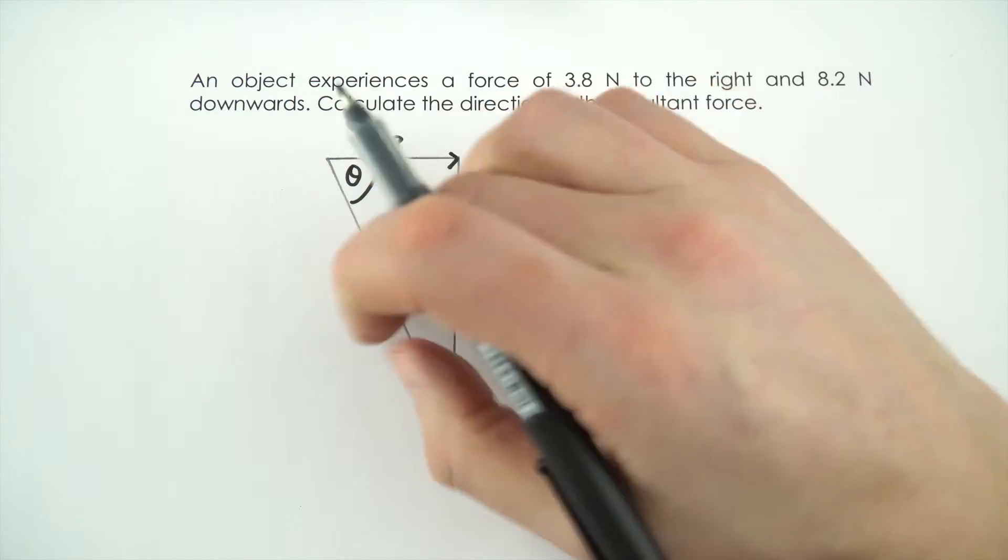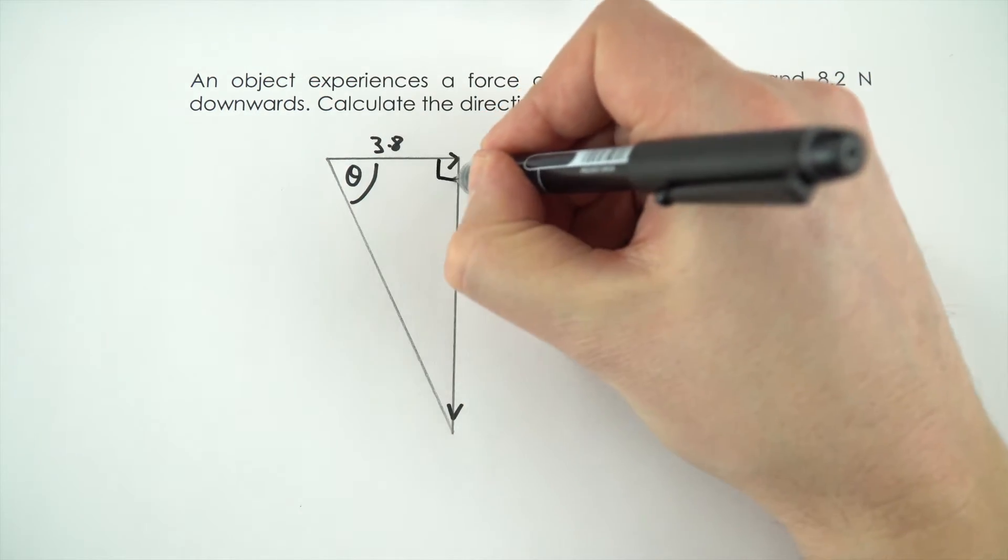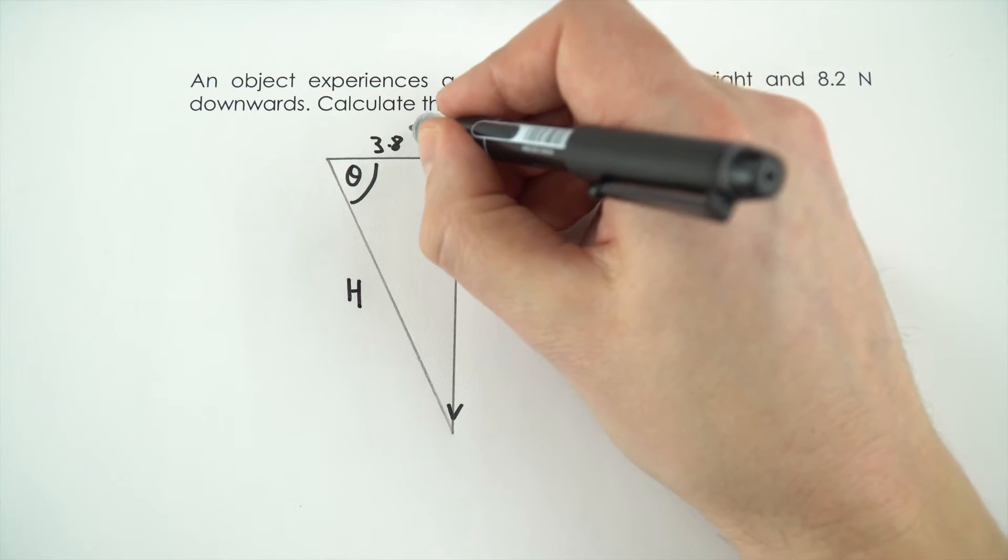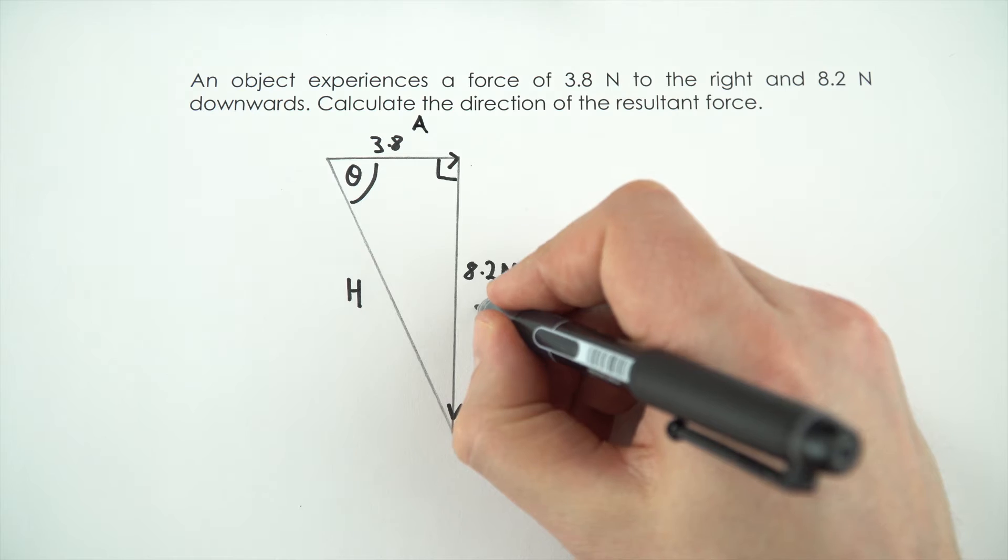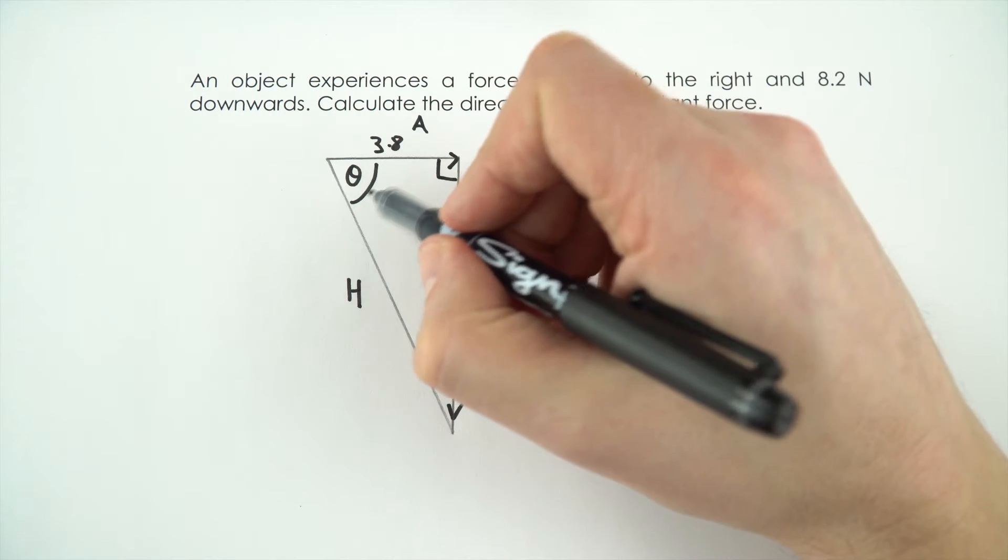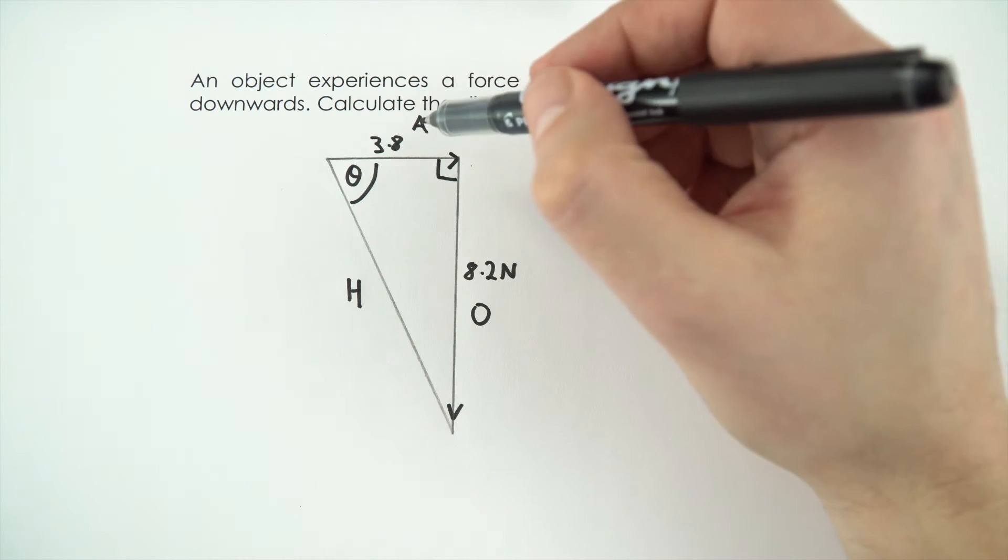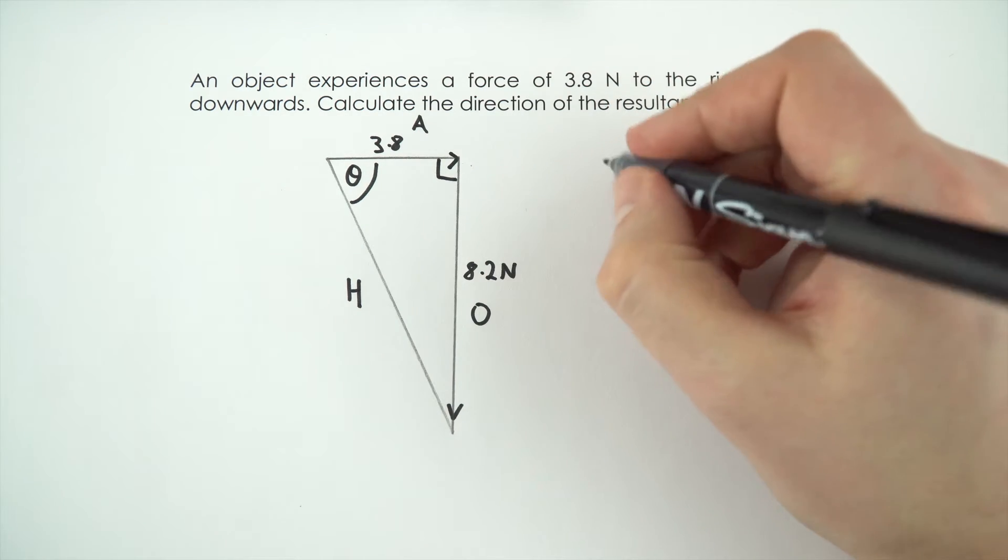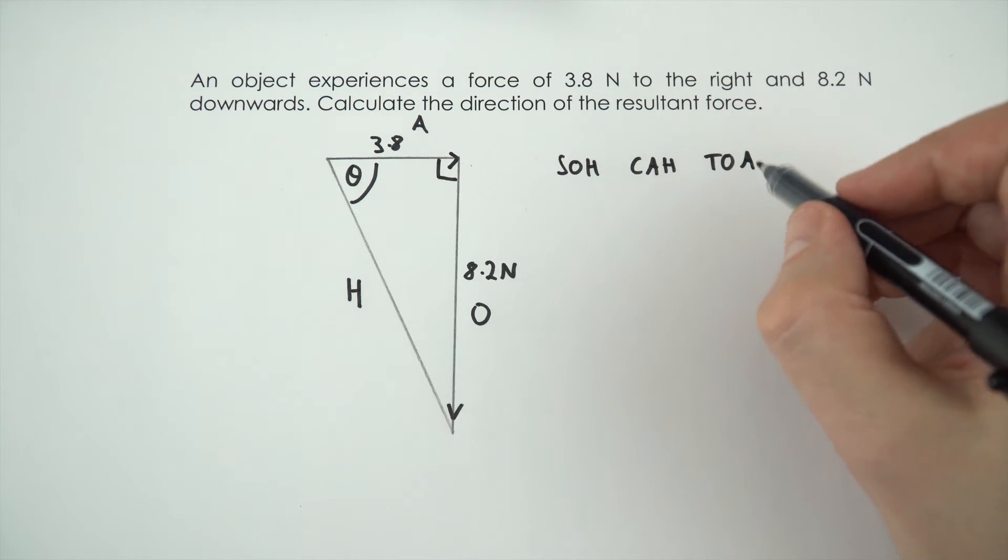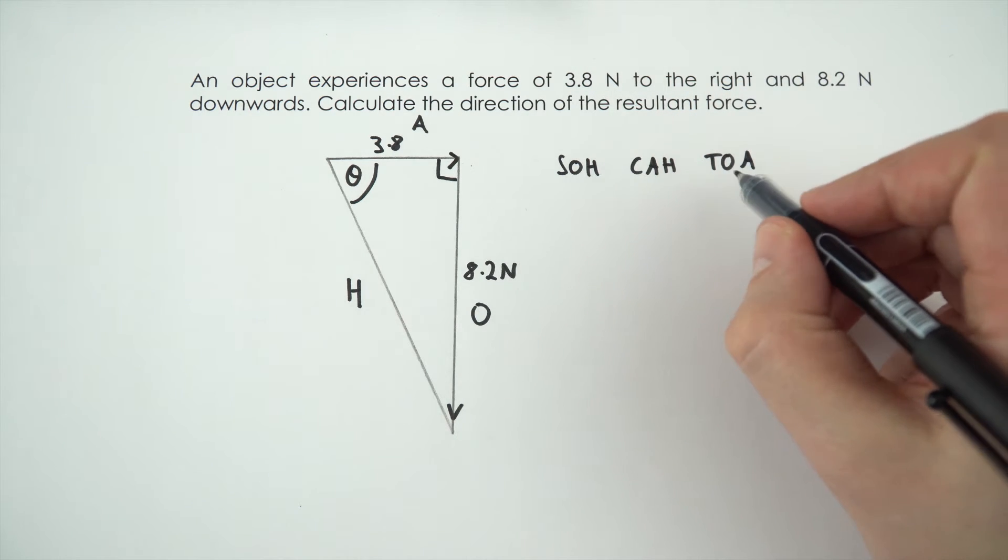I'm just going to label what I know from this triangle. It's a right angle triangle: the longest side is the hypotenuse, this side is the adjacent, and this side is the opposite. For this, our theta value is unknown, but we know the adjacent and the opposite. I remember from SOH CAH TOA that the one we're going to use if we know the adjacent and the opposite side is tan.